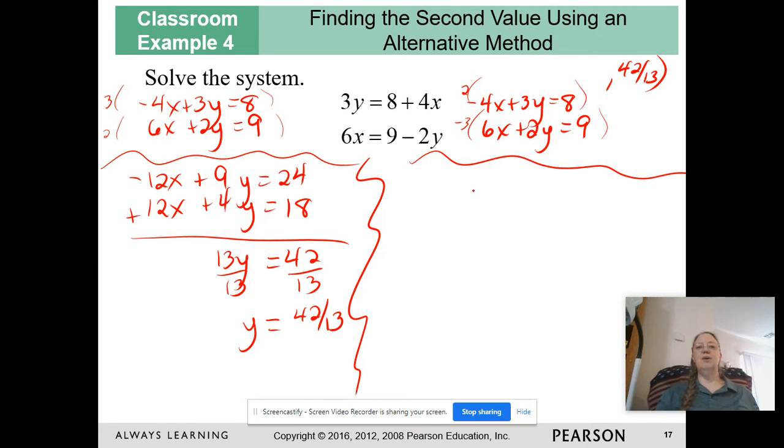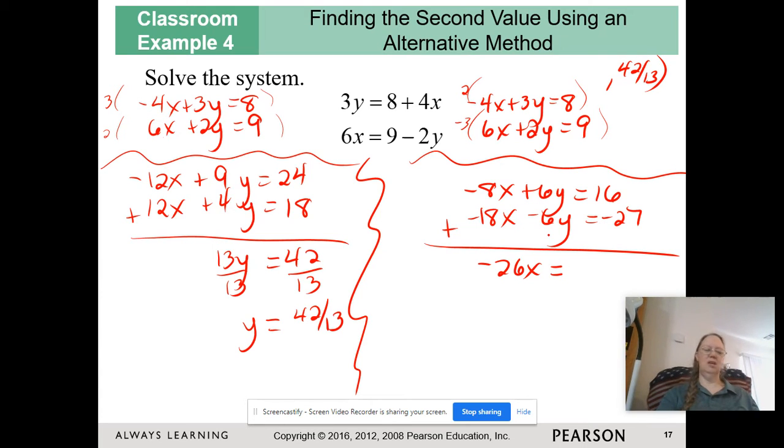Alright, so now I've got negative 8x plus 6y is 16, and negative 18x minus 6y is negative 27. I'm going to add them. I can't do that in my head. Is it negative 11? Negative 27... Negative 11. And I'm going to divide.